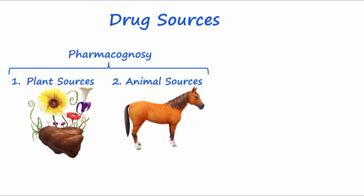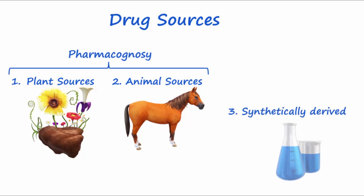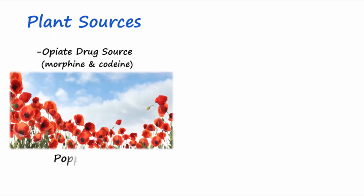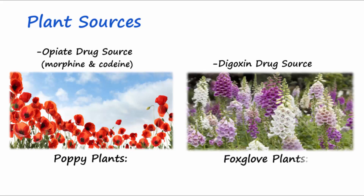Examples of drugs from plants include opiate narcotics such as morphine and codeine, which are obtained from seed capsules of the opium poppy plant, and the drug digoxin, which comes from the foxglove plant.